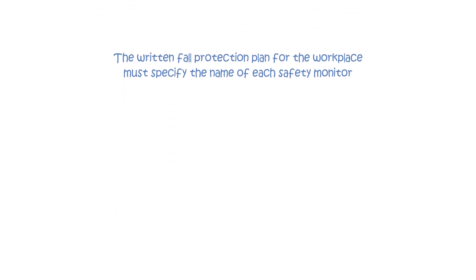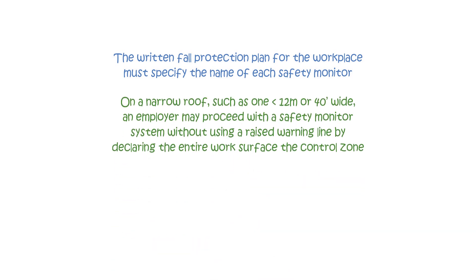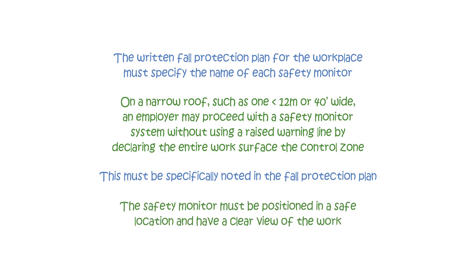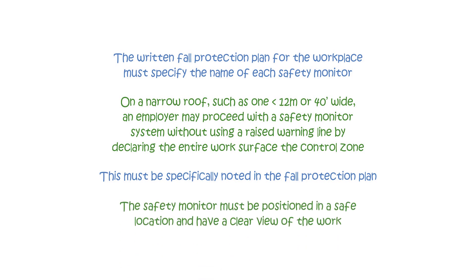The written fall protection plan for the workplace must specify the name of each safety monitor. On a narrow roof, such as one less than 12 meters or 40 feet wide, an employer may proceed with a safety monitor system without using a raised warning line by declaring the entire work surface the control zone. This must be specifically noted in the fall protection plan. The safety monitor must be positioned in a safe location and have a clear view of the work.